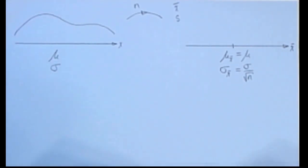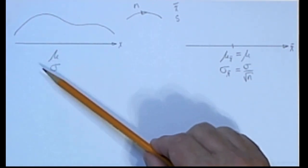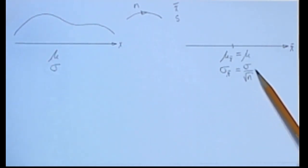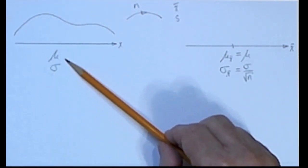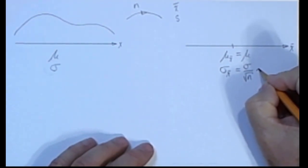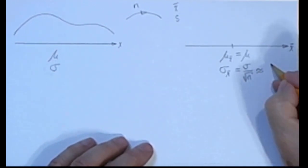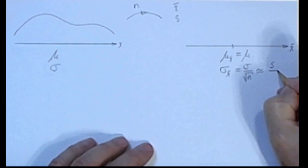It's also important to note that the standard deviation of these X bars will be related to the standard deviation of the original population. It will be that standard deviation of the original population divided by the square root of N, the size of the sample. We will seldom know what this standard deviation is, so we'll almost always have to approximate this value by taking the sample standard deviation and dividing that by square root of N.